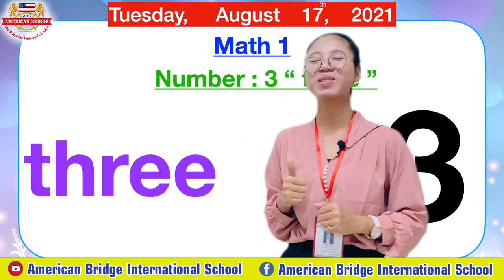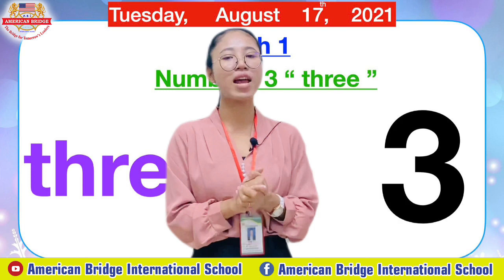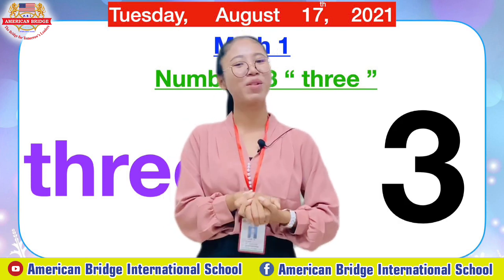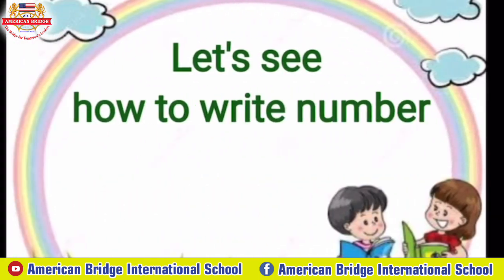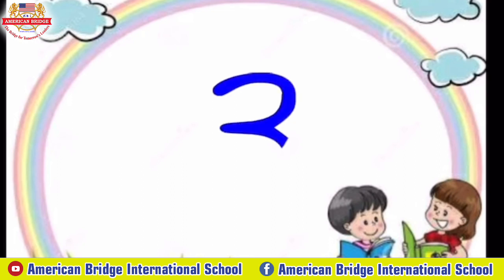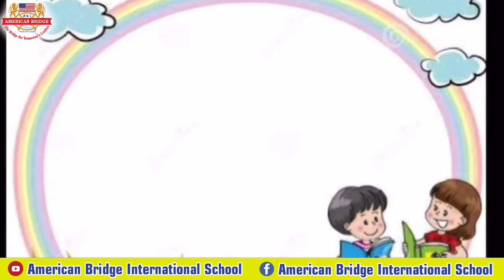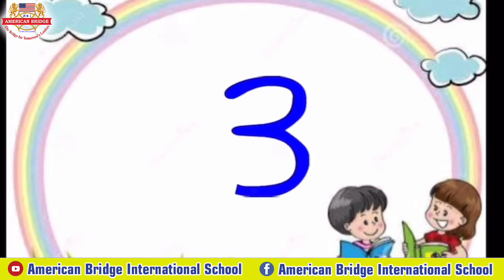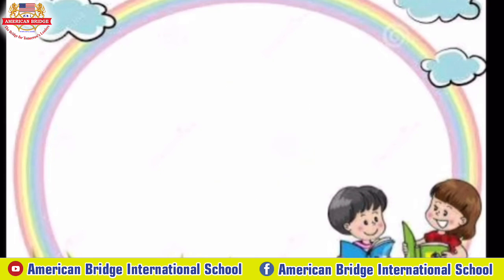Excellent, you spelled it correctly — three! Now teacher will show you how to write number three properly. Make a curve, and make a curve again. Once more: make a curve and make a curve again. That's number three!